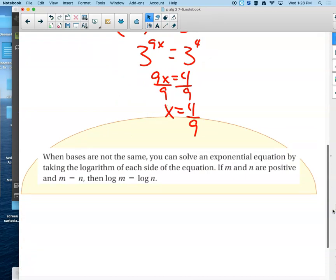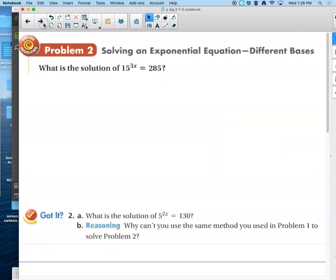As you're doing those, you should start thinking, wait a second, these are a little too nice. The bases matched up really nice on these problems. What do we do if the bases aren't the same? When the bases aren't the same, we can solve an exponential equation by taking a logarithm of each side of the equation. If m and n are positive and m equals n, then the logarithm of m will equal the logarithm of n. This is using the change of base formula.